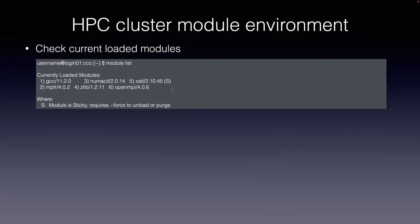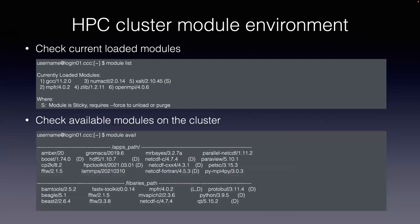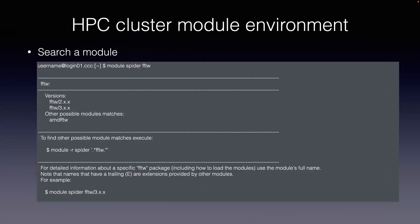If you want to know what modules are available on the whole HPC cluster, you can use 'module avail' to check the available modules. In addition, if you want to search for a module for the application you are interested in, you can use 'module spider' followed by the application name. For example, if we are interested in the FFTW library, we can use 'module spider FFTW' to check what versions are available on this HPC cluster.